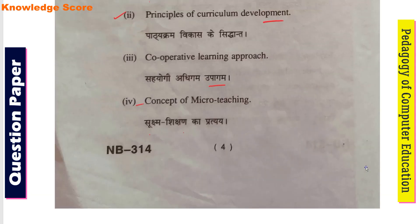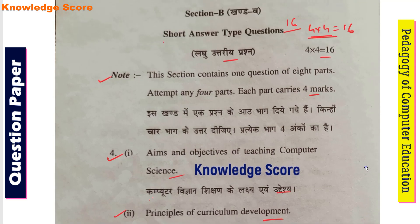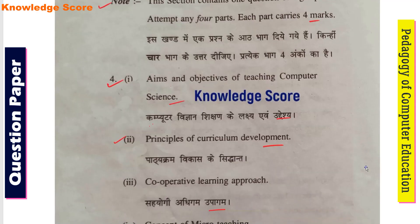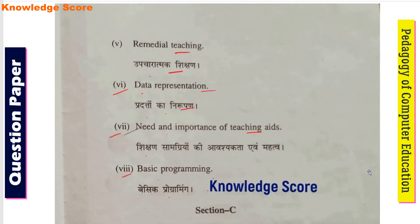So you have seen that in Section B there are 8 questions and you have to attempt 4. Each question carries 4 marks. For good marks, you need to give at least 2 to 3 pages per answer.